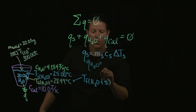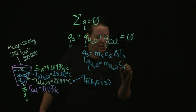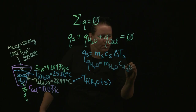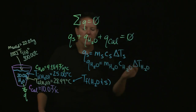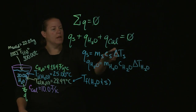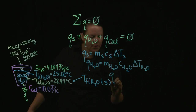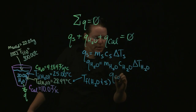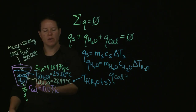Q of the water equals the mass of the water times the specific heat capacity of the water times the change in temperature of the water. And I need the Q of the calorimeter as well. What's interesting about a calorimeter is that its Q is based off of what you see in the specific heat capacity.